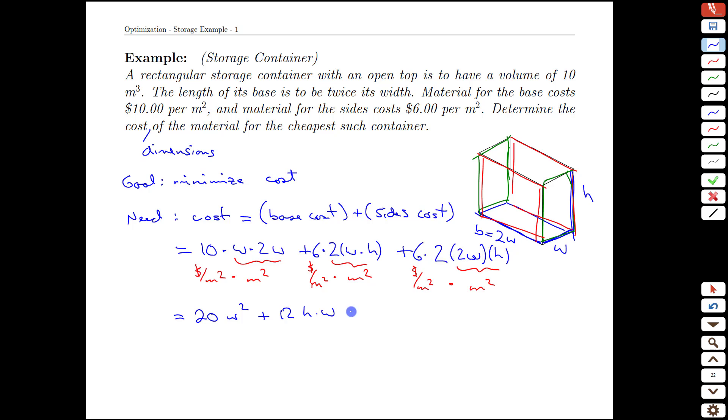This is 2 times 2 times 6 is 24, 4w times h's. In fact, these are the same. So we actually have 20w squared plus 36w times h's. And the units there would be dollars.